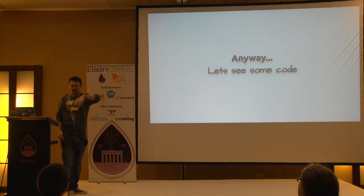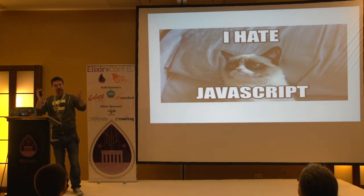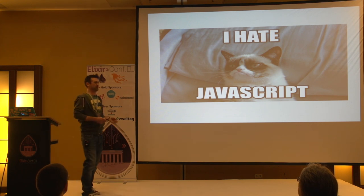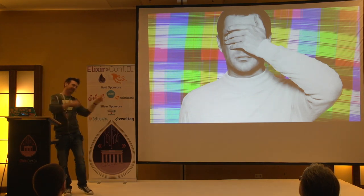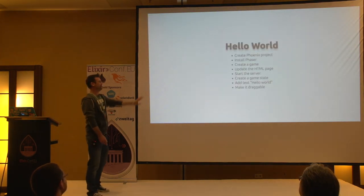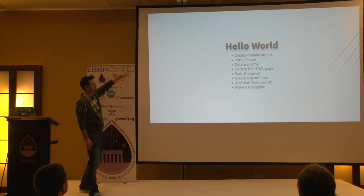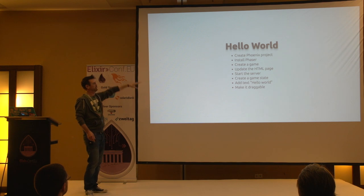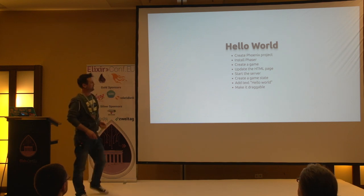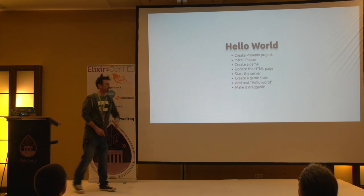I'm going to show you some code - be warned. I'm using a JavaScript OO library, so I can't really do this talk without showing you a bit of JavaScript. What we're going to do: build a Hello World, create a Phoenix project, install Phaser, create a game, update the HTML to put the game in the page, start the server, create a state to put the Hello World text in, add the text, and then make it draggable.